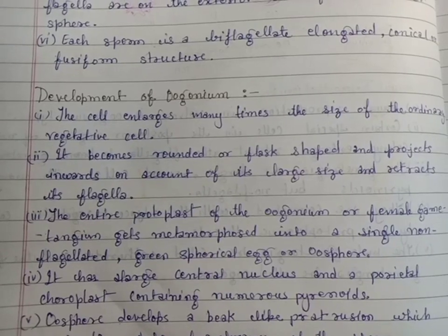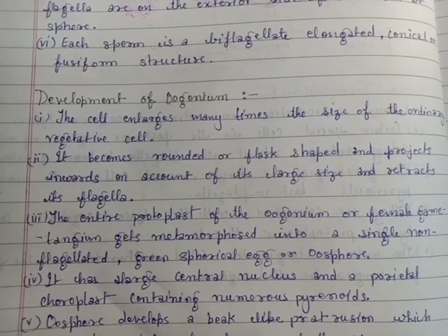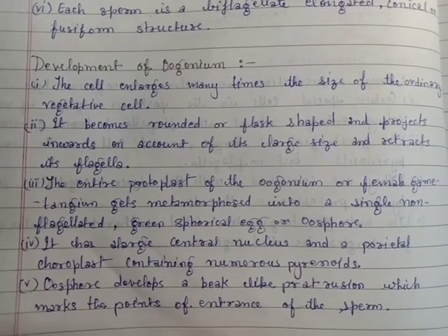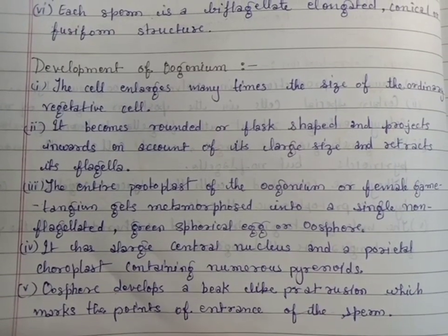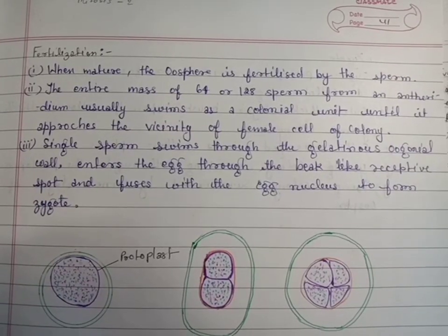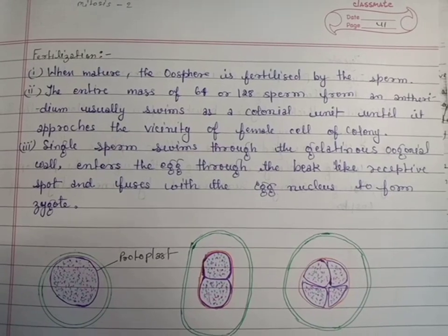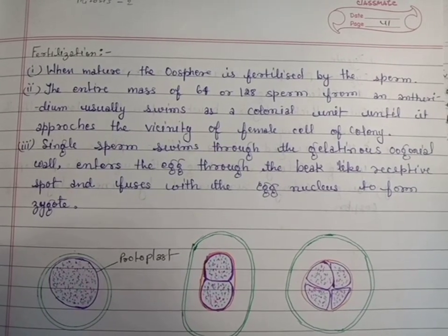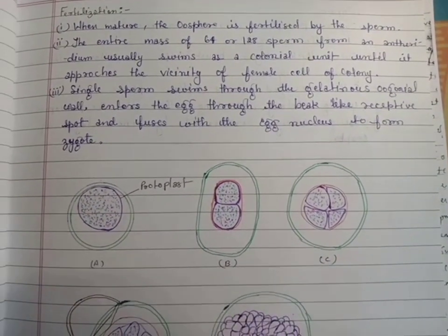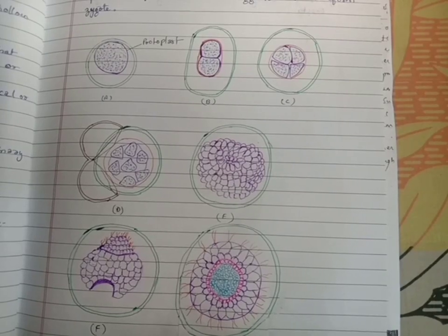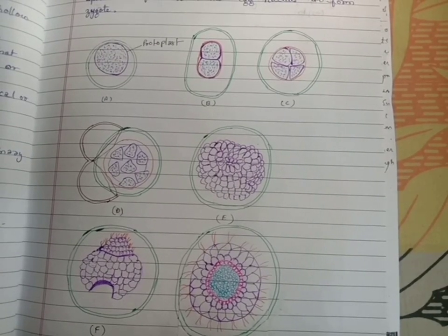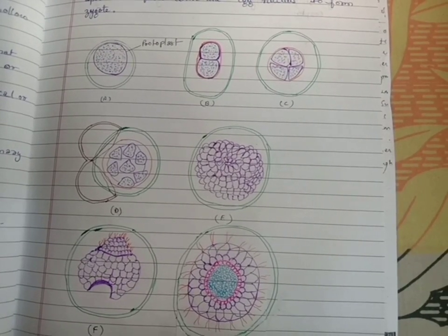The eighth topic is the development of eugonium. The ninth topic is fertilization. There are seven diagrams of fertilization of Volvox.